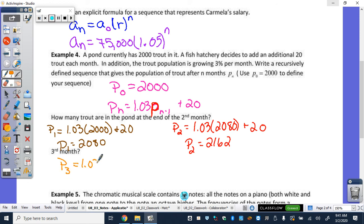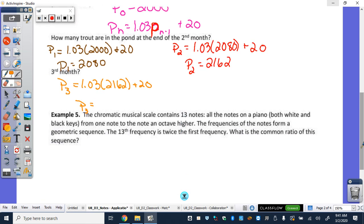So, now we can figure out our third month, which is our next question. Just keep going with our recursive formula. So, what do we get? Two hundred, two thousand, two hundred what? Well, yeah, you can't create that last portion of the trout, so it would round down. Forty-six. And then it's .8 after that? Yeah.